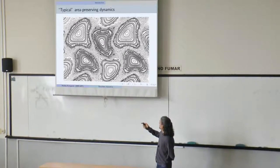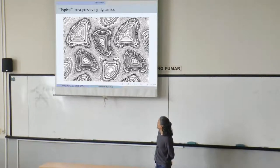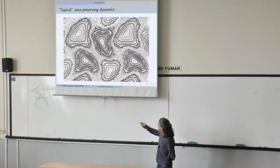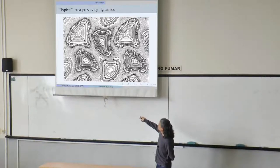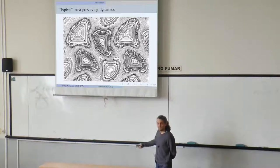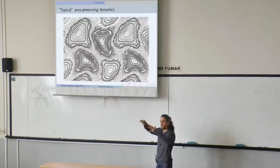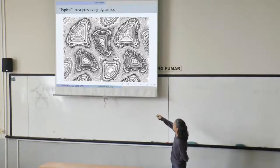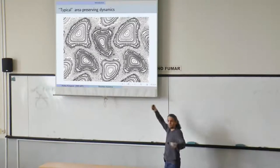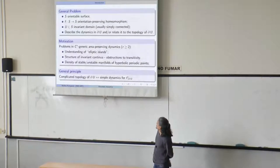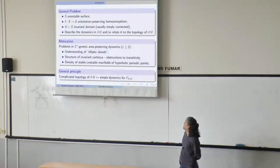One of the problems was to understand this picture better in the general setting. Locally, the elliptic islands are very well understood from the local point of view via KAM theory. But if you take bigger and bigger invariant circles and you take the biggest one — the maximum invariant circle containing this point — the topology of the boundary of this circle is not well understood. In the maximal invariant disk, we don't know what can happen. We don't even know a priori if this disk can be very large.